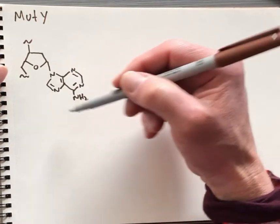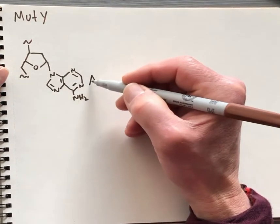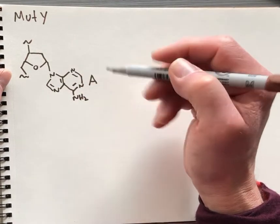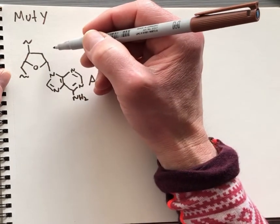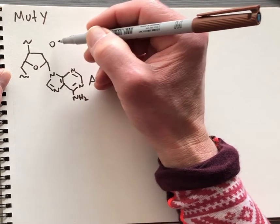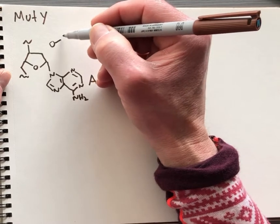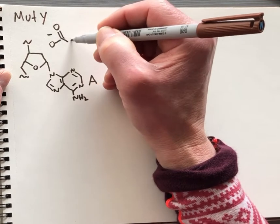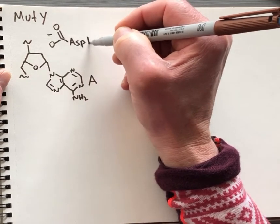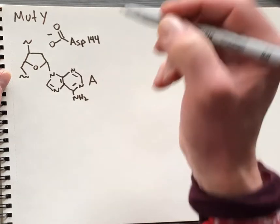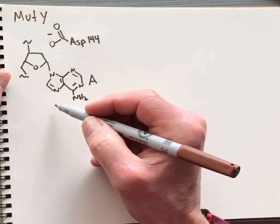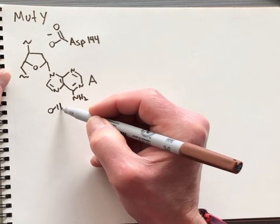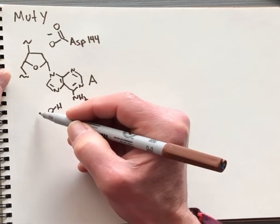This is adenine. It's been flipped out into the active site of MutY and therefore is in close proximity with this carboxylic acid functional group, the residue aspartate 144. The other important agent in this mechanism is another carboxylic acid functional group.